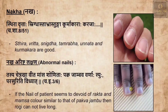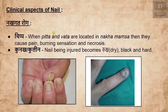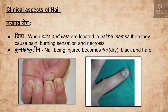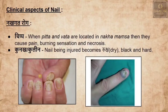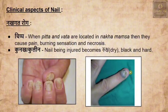The clinical Nakha Gatha Rogas are mainly Chippa and Kunaka (or Kulina). Chippa is when pitta and vata are located in nakha mamsa, causing pain, burning sensation and necrosis on the nail bed. Kunaka or Kulina is when the nail is injured, becoming rooksha, black and dry due to improper circulation of blood.